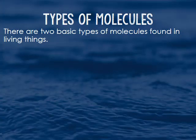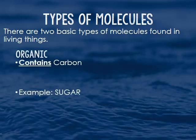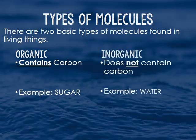There are two types of molecules that are found in all living things. The first type is an organic molecule, and it's going to be one that contains carbon, like sugar — sugar has carbon in it. The other kind of molecule is an inorganic one, and that is one that does not have carbon in it, and that would be water.